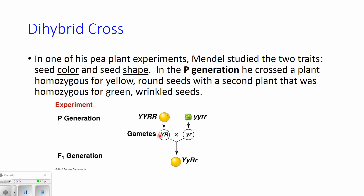When the other plant makes its gametes, it can only pass down little y and little r because that's all it has. So every time you cross-pollinate these two plants, one plant always passes down big Y and the other passes down little y; one passes down big R and the other passes down little r. So the genotype of the offspring would be heterozygous yellow, heterozygous round, and the phenotype would be yellow round seeds. That's the F1 generation — exactly what Mendel got, every single time, even doing some experiments hundreds of times.